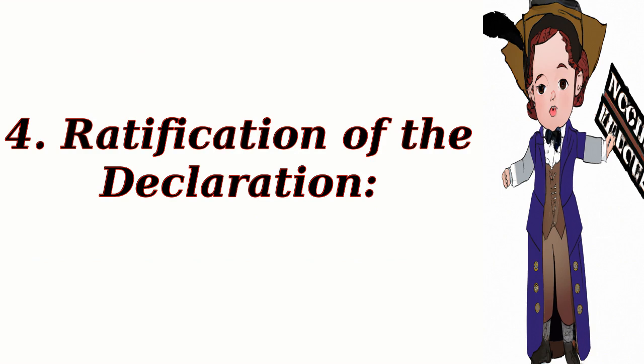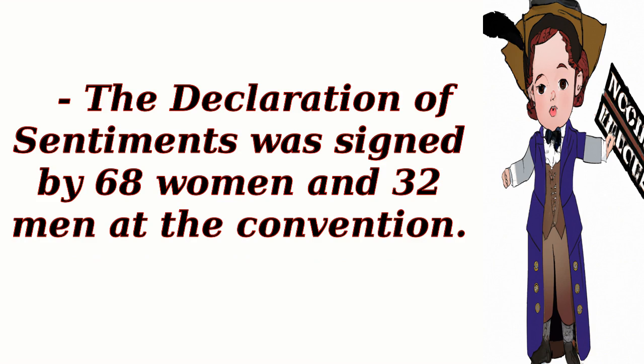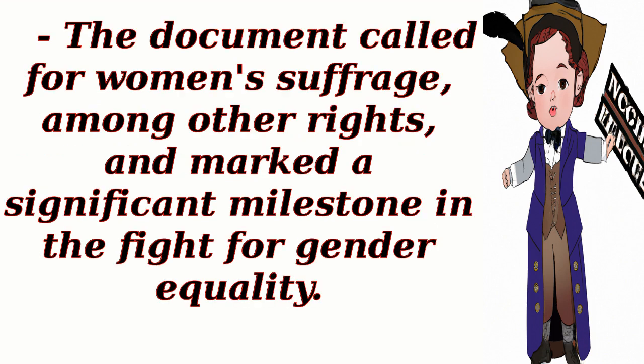4. Ratification of the Declaration. The Declaration of Sentiments was signed by 68 women and 32 men at the convention. The document called for women's suffrage, among other rights, and marked a significant milestone in the fight for gender equality.